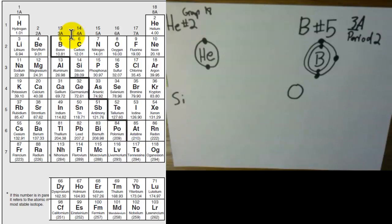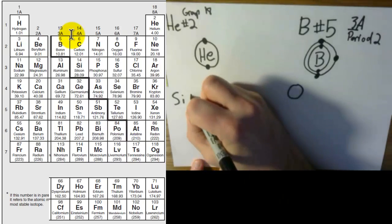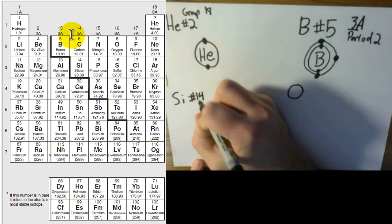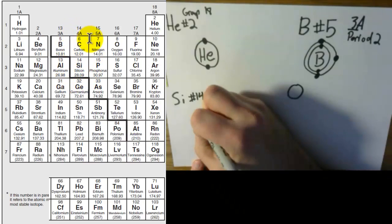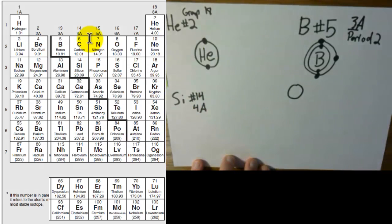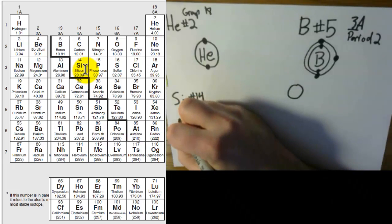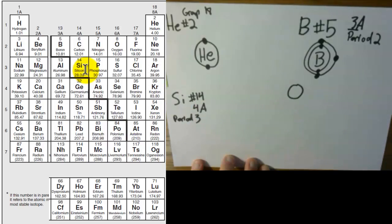All right. Next up, we have silicon. Silicon is element number 14. And if you check out its spot on the table here, it is in group 4A. And it is in period three. See it go across here? Period three. Silicon.